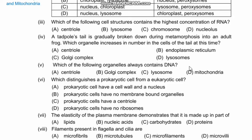Question 6: What distinguishes a prokaryotic cell from a eukaryotic cell? Options are: prokaryotic cells have a cell wall and a nucleus; prokaryotic cells have no membrane-bound organelles; prokaryotic cells have a centriole; prokaryotic cells have no ribosomes. Right option is B, because prokaryotic cells have no membrane-bound organelles, whereas all eukaryotic cells have membrane-bound organelles.